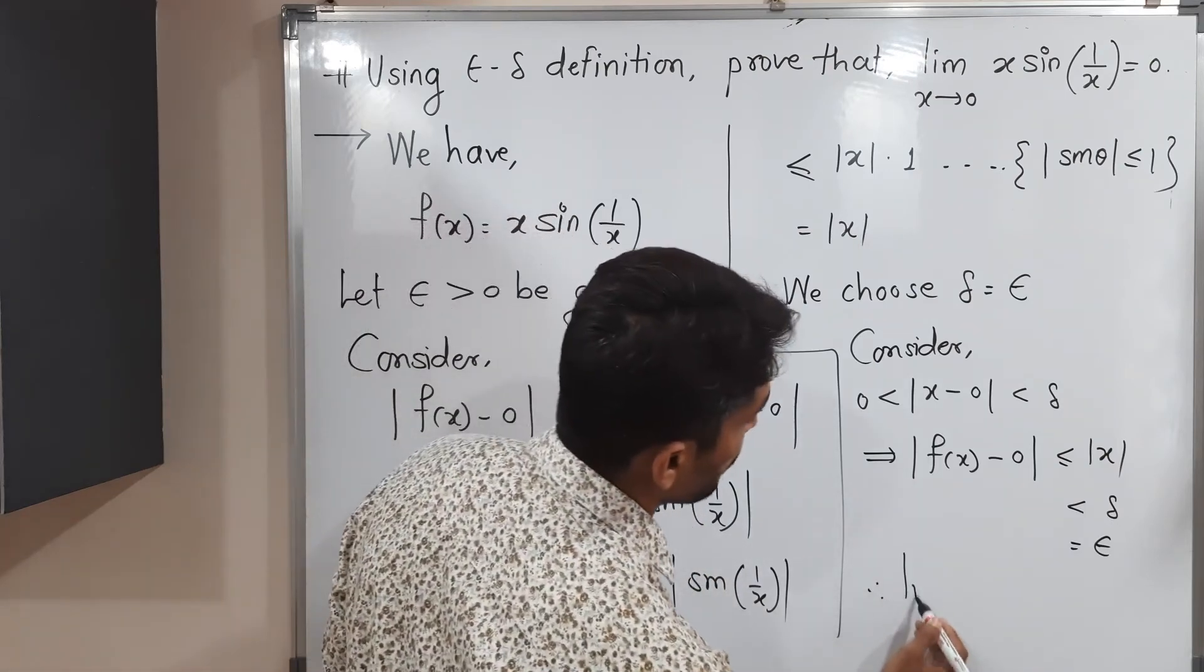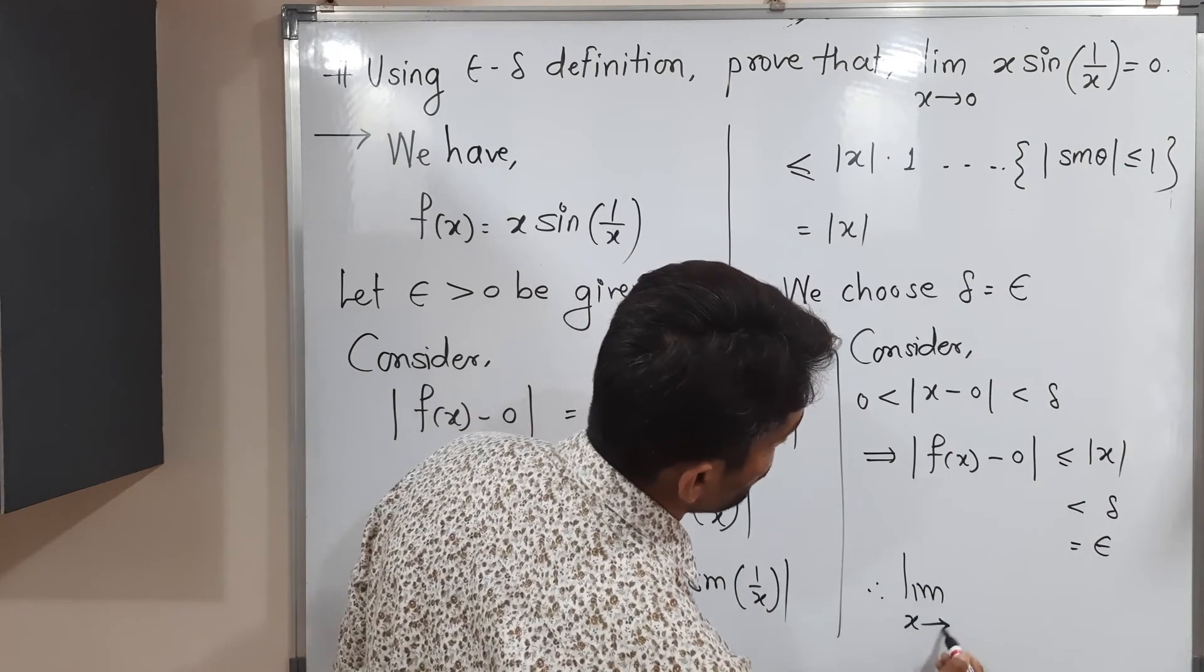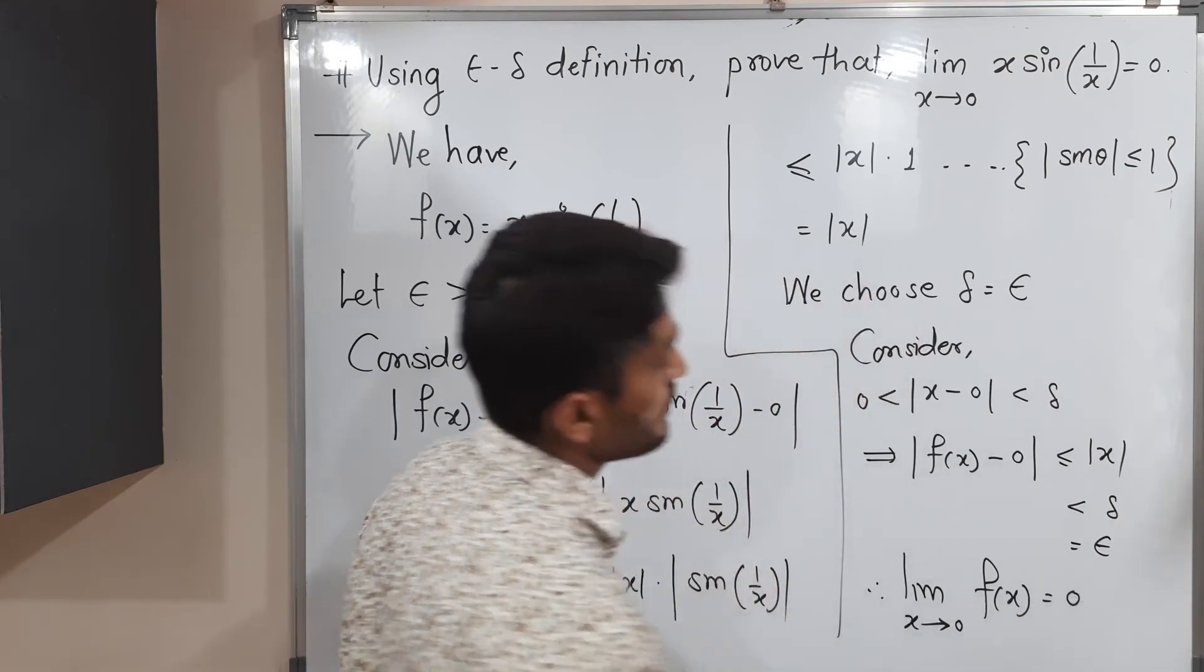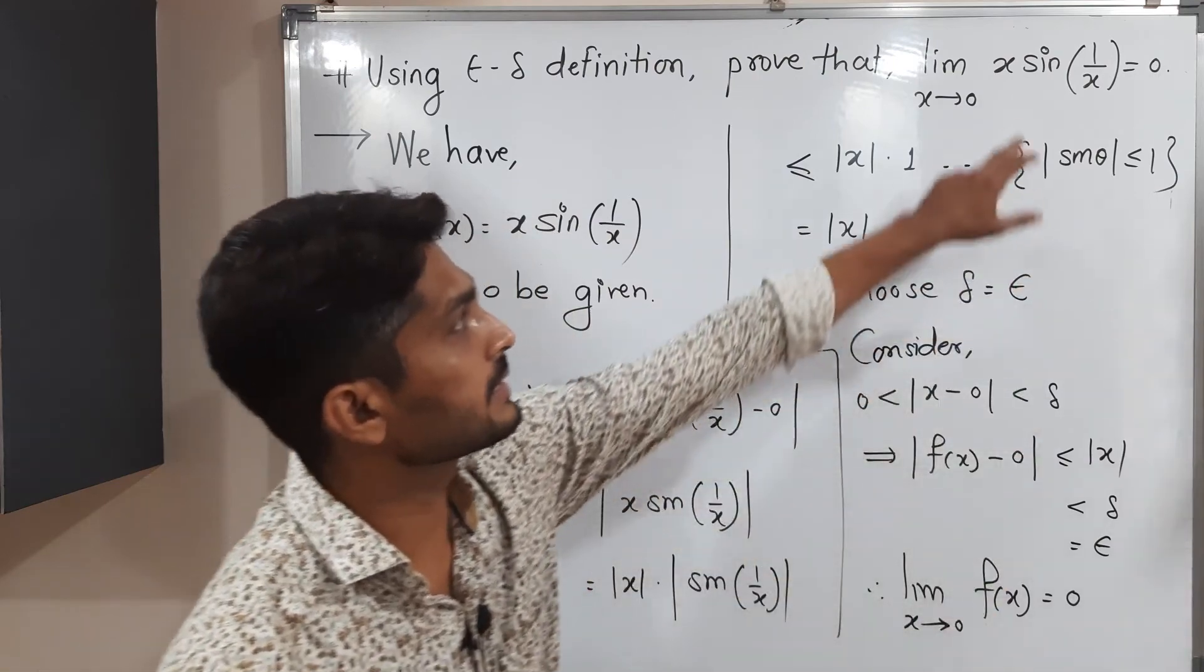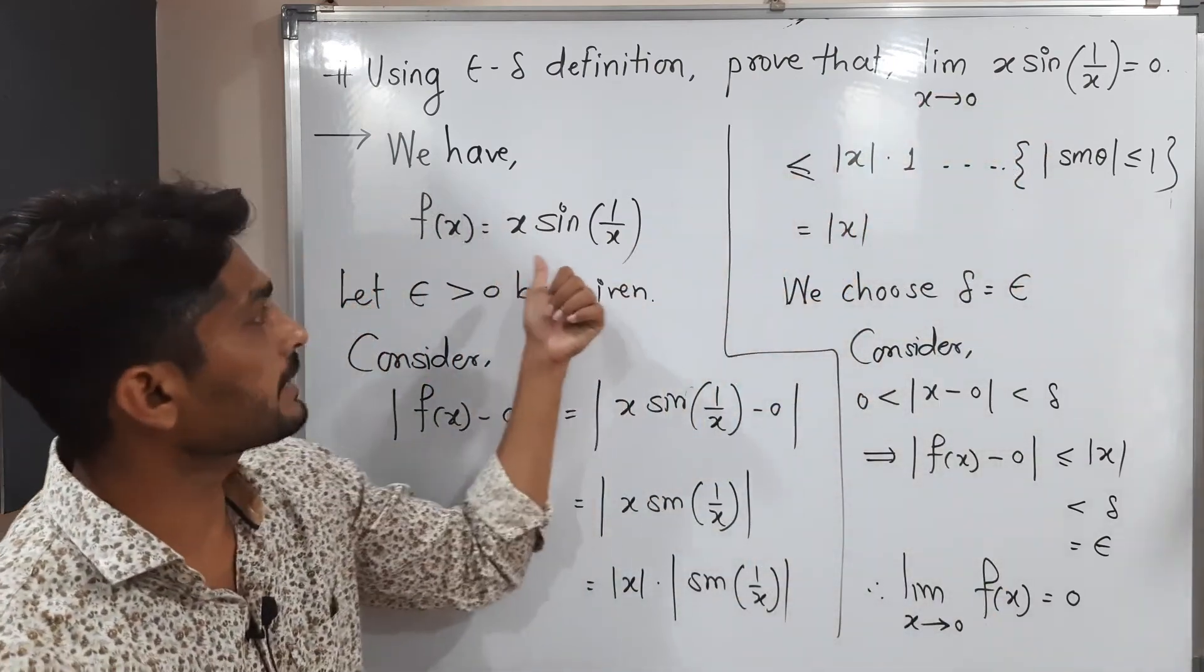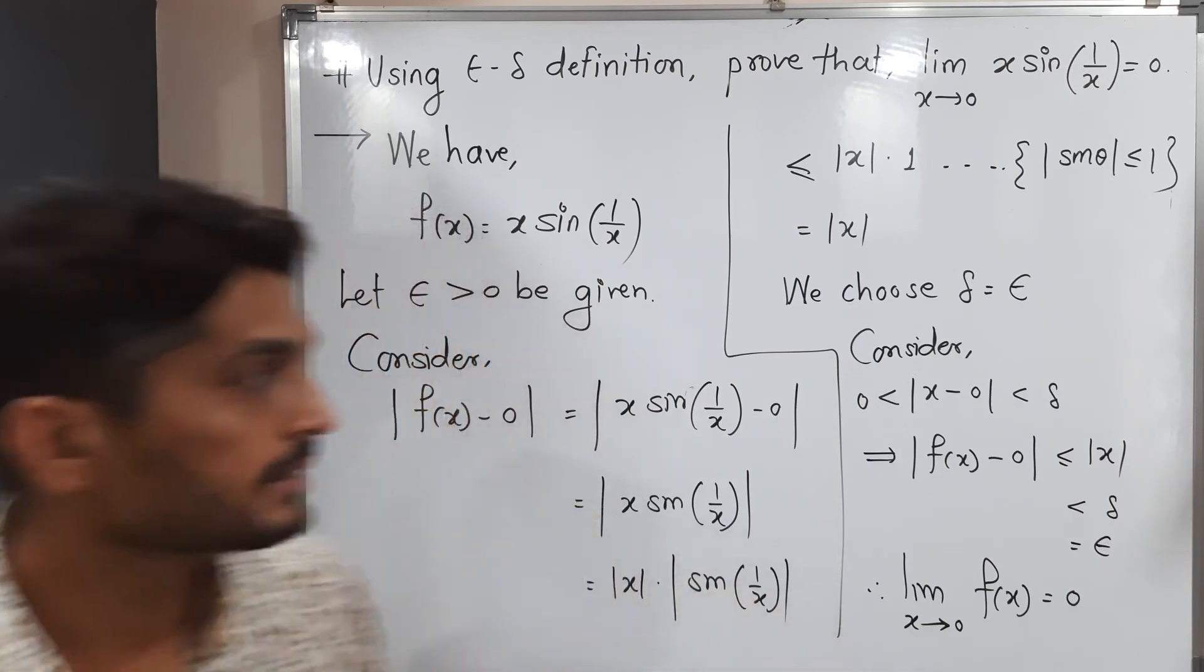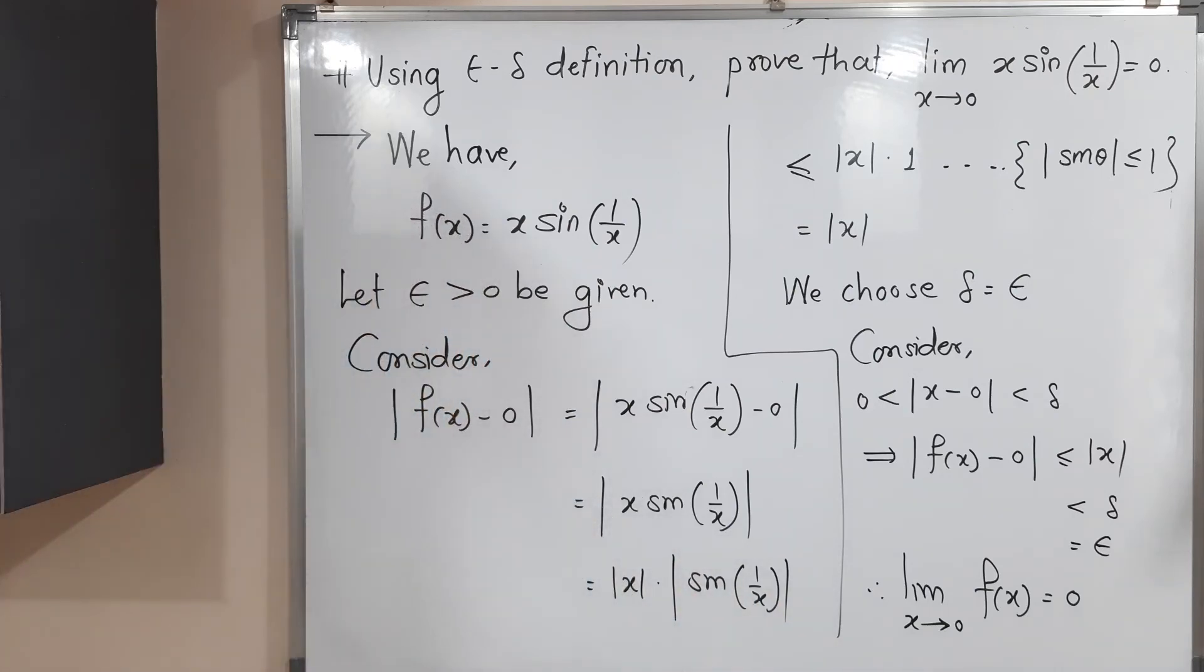Therefore, limit x tends to 0, f of x is equal to 0. What is my f of x? x sin 1 by x. So in this way, we prove this thing. Make a screenshot of it. Thank you, bye-bye.